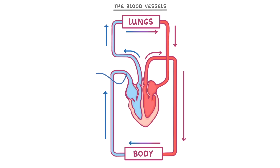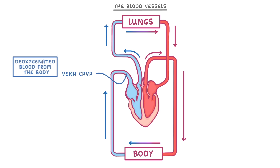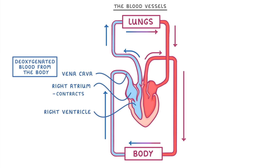This first blood vessel is the vena cava, which is the body's largest vein and is where deoxygenated blood flows from the body into the heart. The deoxygenated blood is now in the right atrium, and as the right atrium fills with blood it contracts and pumps the blood down into the right ventricle. The right ventricle then also contracts and pumps the blood into the pulmonary artery, which carries the blood to the lungs where it can become oxygenated.